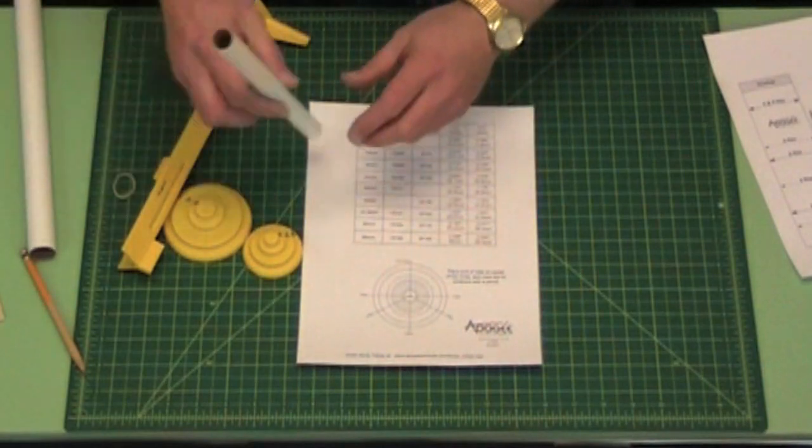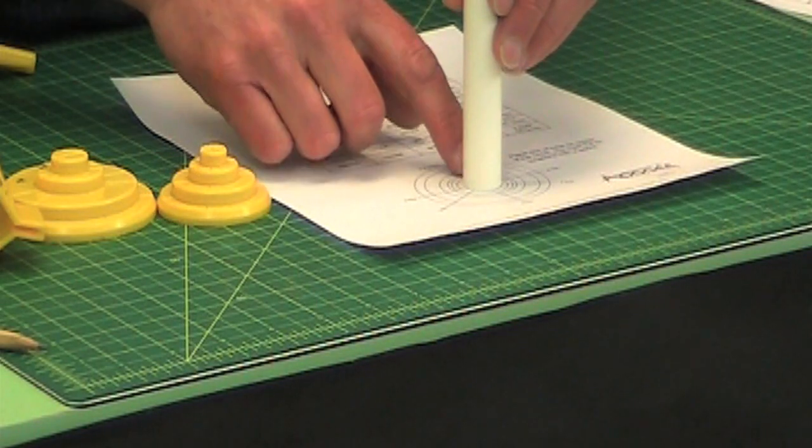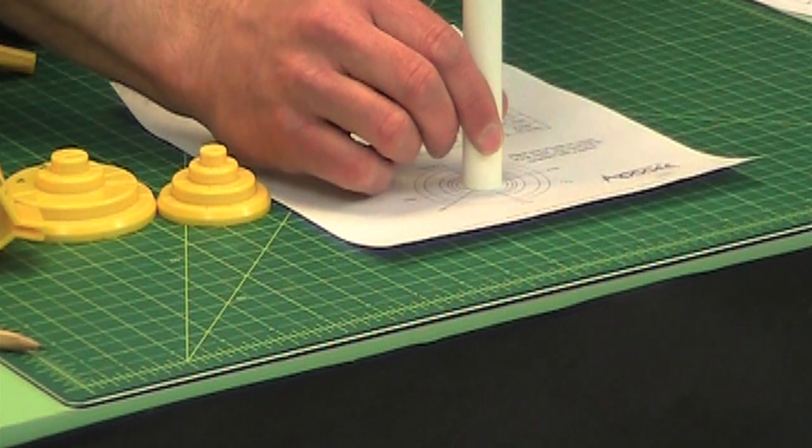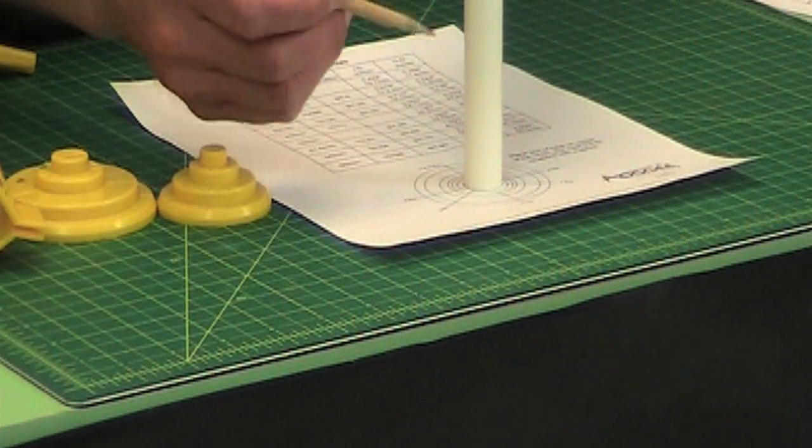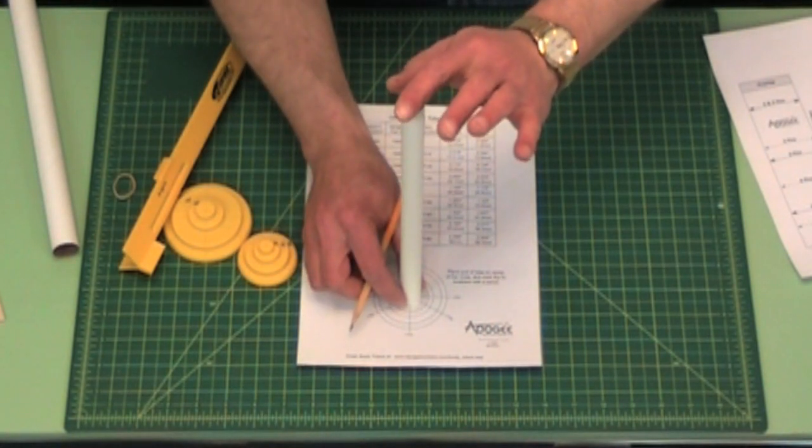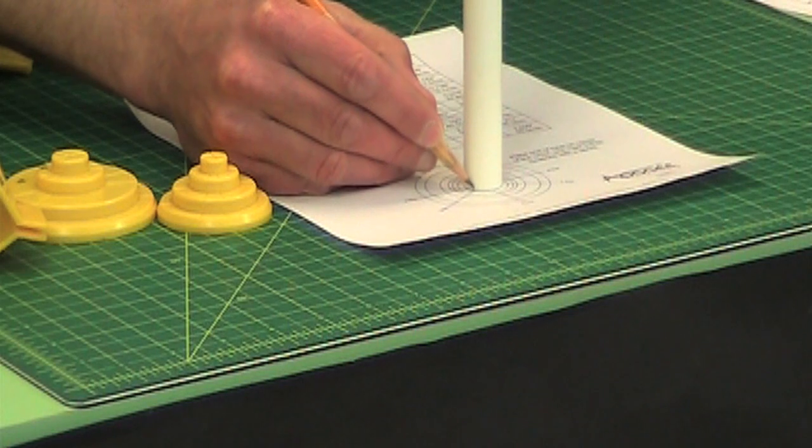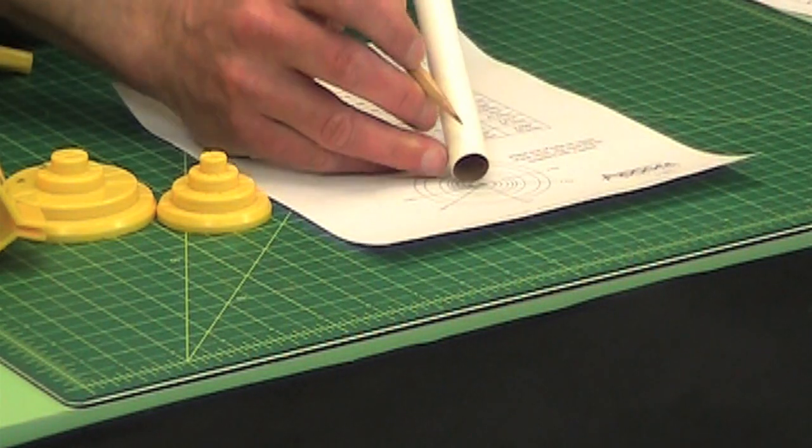When using this what you would do is you'd put it on the paper like that, align it to the right ring and then kind of hold it, and you can tell I'm pretty unsteady here. The longer the tube the harder this is to hold, and then you would put a little tick mark here on the bottom of the tube.